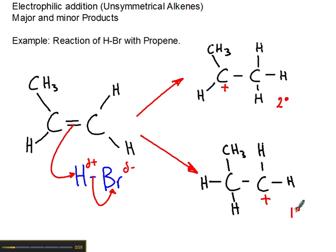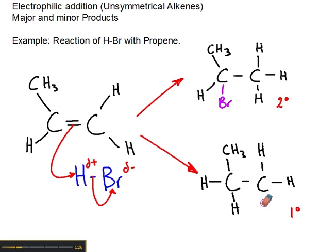Depending on where our hydrogen bonded, we could then have the bromine join onto the secondary carbocation, in this instance, to form the major product. Or we could have the bromine join onto the primary carbocation to form the minor product.